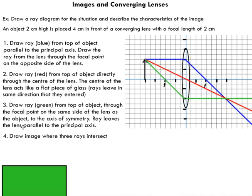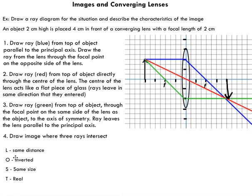The last step is to draw the image where the three rays intersect. Looking at the image characteristics: the location is four centimeters from the lens on the right side — the same distance as the object. It is inverted, vertically flipped, and the same size — two centimeters. This is a real image, because the rays of light are actually coming from this image. Real images have rays of light that actually converge at the image location, whereas virtual images only appear to have rays coming from them.